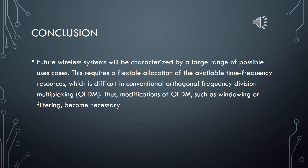Finally, as a conclusion, we can say that future wireless systems will be characterized by a large range of possible use cases. This requires a flexible allocation of the available time-frequency resources, which is difficult in conventional orthogonal frequency division multiplexing OFDM. Thus, modifications of OFDM such as windowing or filtering became necessary. Thank you for your attention.